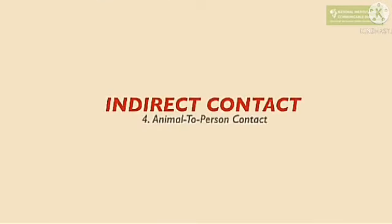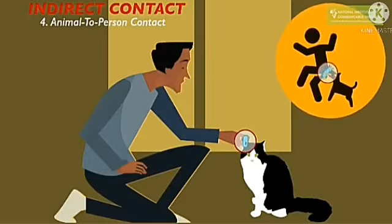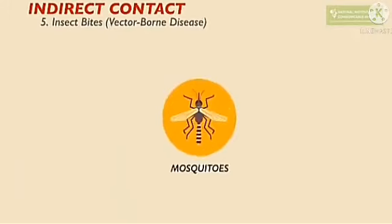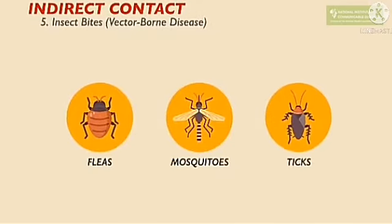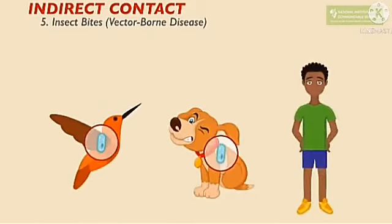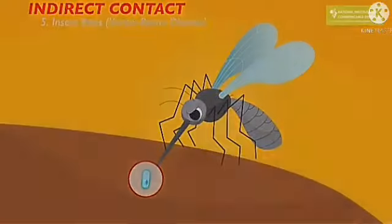Animals can also transfer diseases indirectly to humans. Dog bites and the feces of animals can affect persons. Insect bites can also result in the transfer of diseases. Fleas, mosquitoes, and ticks act as vectors. Even birds, dogs, and mammals carry these diseases and transfer them from one person to another.